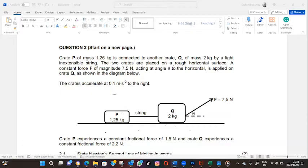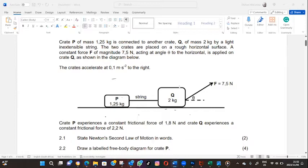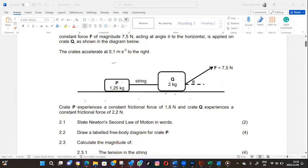Crate P of mass 1.25 kg is connected to another crate Q of mass 2 kg by a light inextensible string. The two crates are placed on a rough horizontal surface. A constant force F of magnitude 7.5 Newton acting at an angle theta to the horizontal is applied on crate Q as shown in the diagram below. The crate accelerates at 0.1 meters per second squared to the right, so the system is going in this direction to the right.